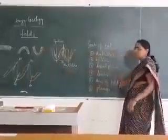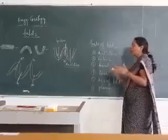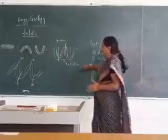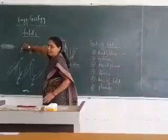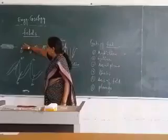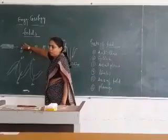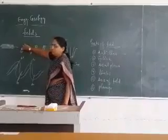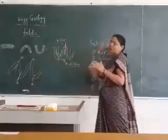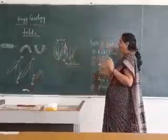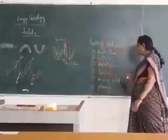What is exactly a limb? Limbs are the sloping sides of a fold. These are the limbs. When the fold or the rock band gets folded, the both sides which are sloping, they are known as limbs.